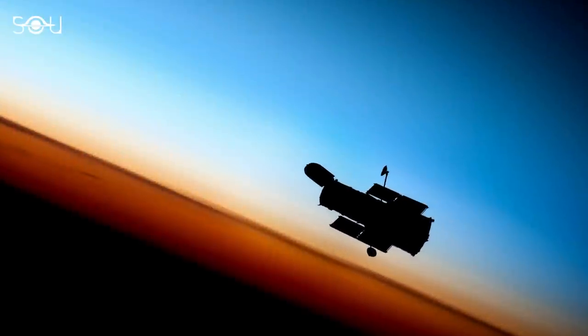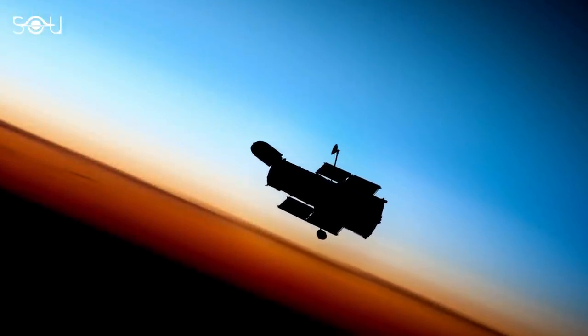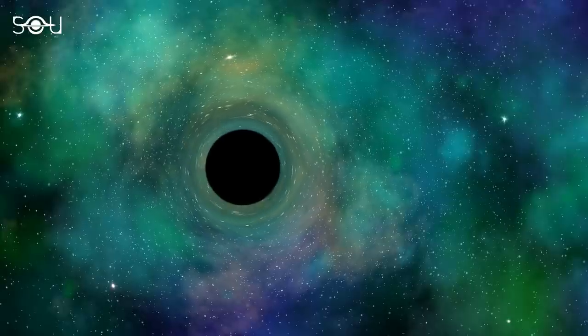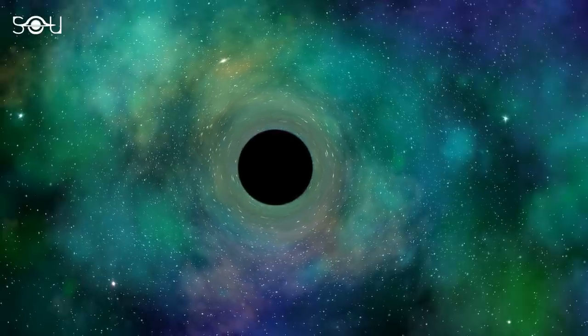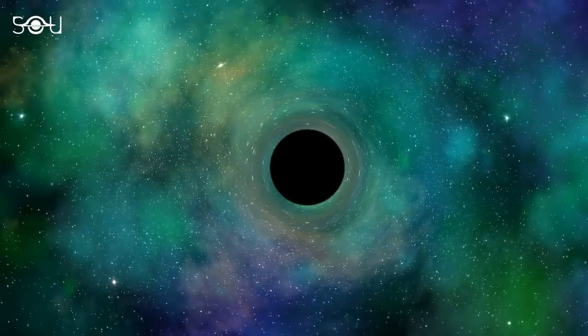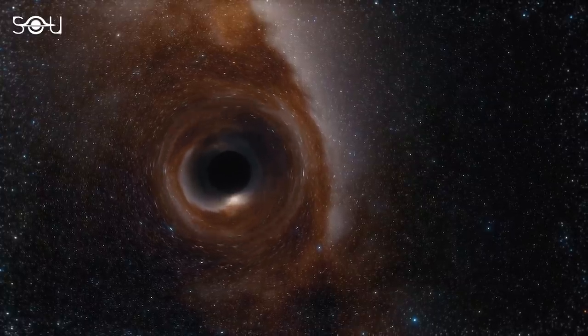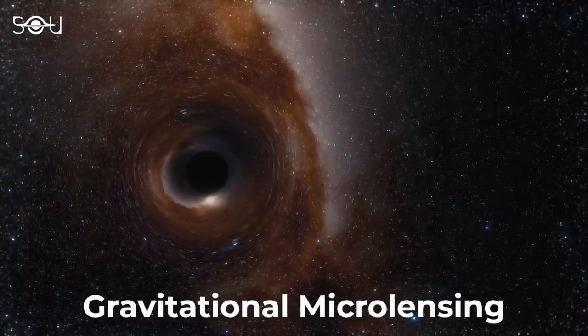But now, with the help of the iconic Hubble Space Telescope, astronomers have found the first free-floating stellar mass black hole. This discovery was made using a technique called gravitational microlensing.